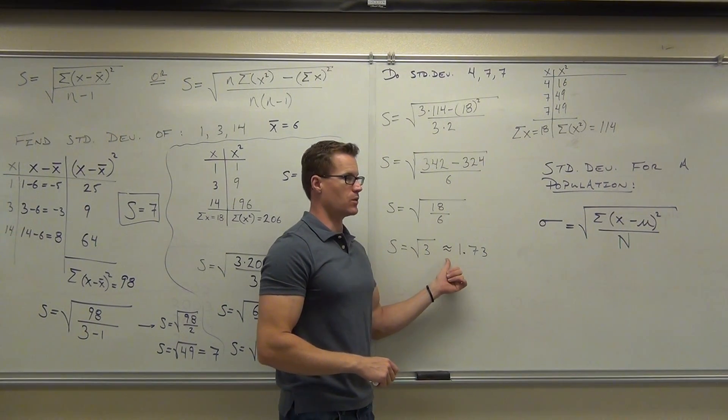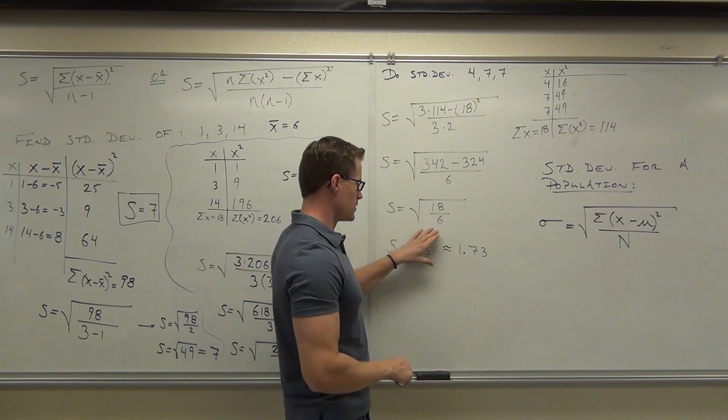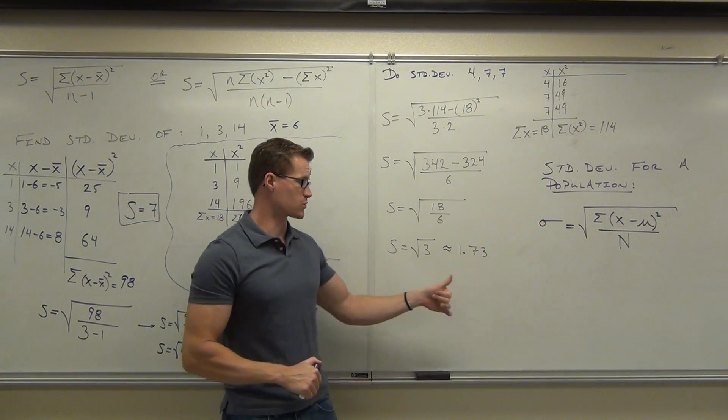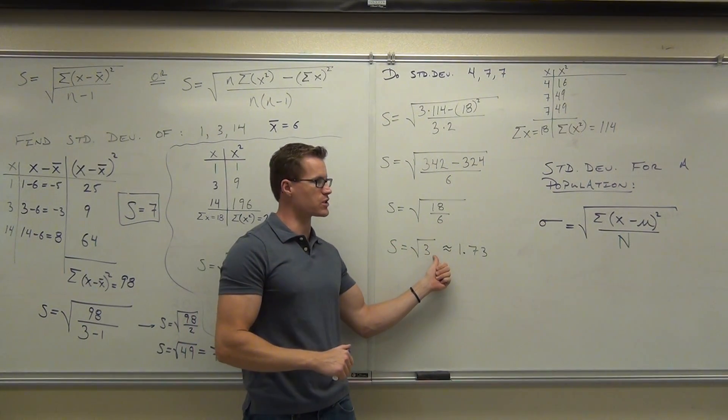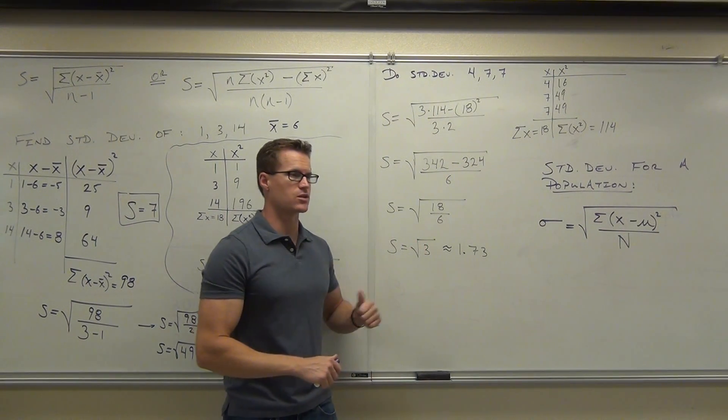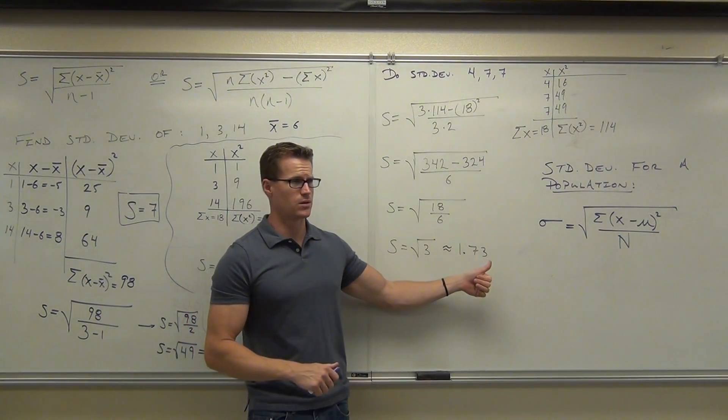3 is not the standard deviation. You have to take the square root because we're going to talk about what this number is inside in just a second. So you can't just leave it as 3. You take the square root of 3, that's what you get. You okay with that?